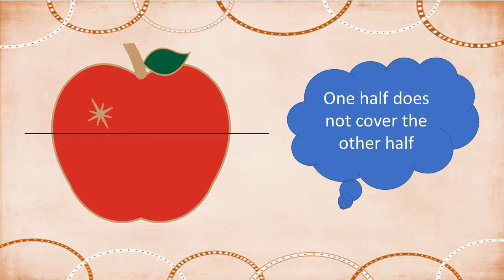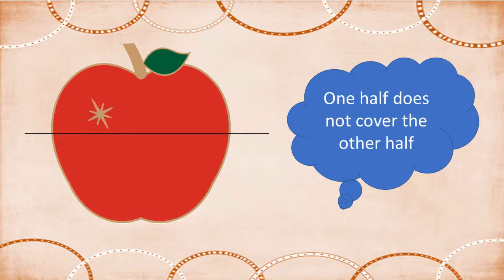Children, what do you see in this picture? Yes, this is a picture of an apple. The fold along the dotted line in the apple divides it into two parts which do not fall exactly on one another. So, the apple is asymmetrical with respect to this line.